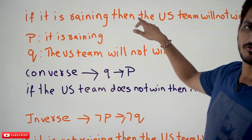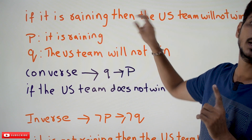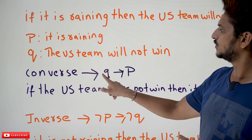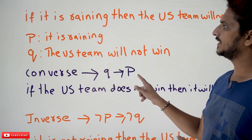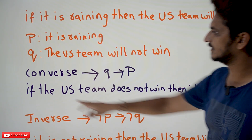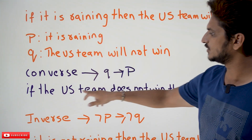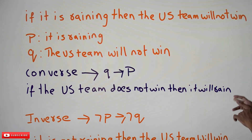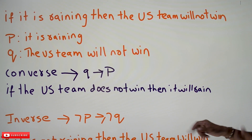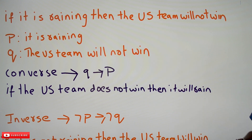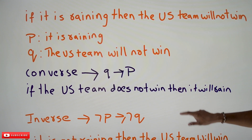This statement is in the form of P implies Q. What is the converse? Q implies P — meaning: 'If the US team does not win, then it will rain.' That is the converse of this statement.